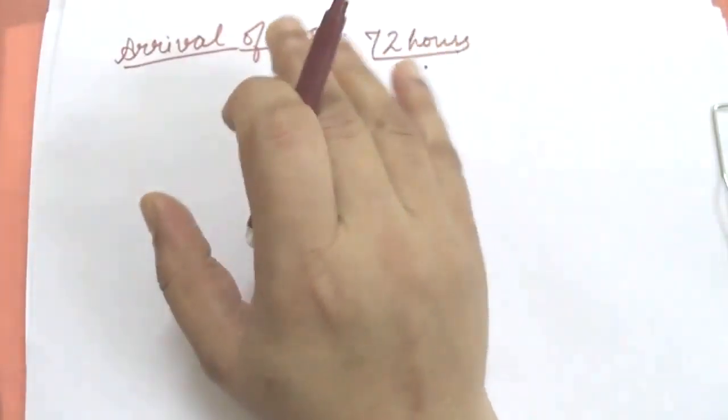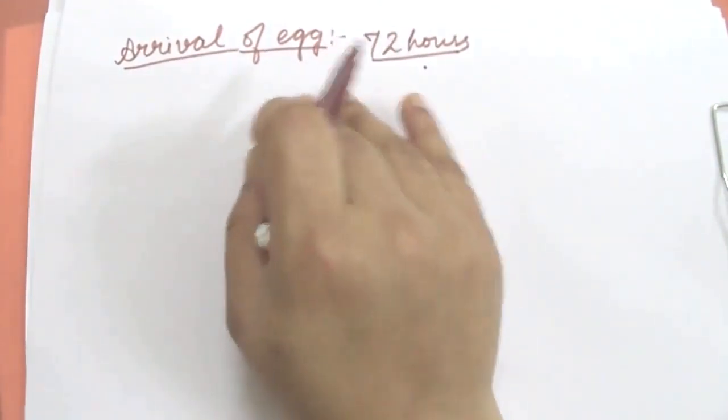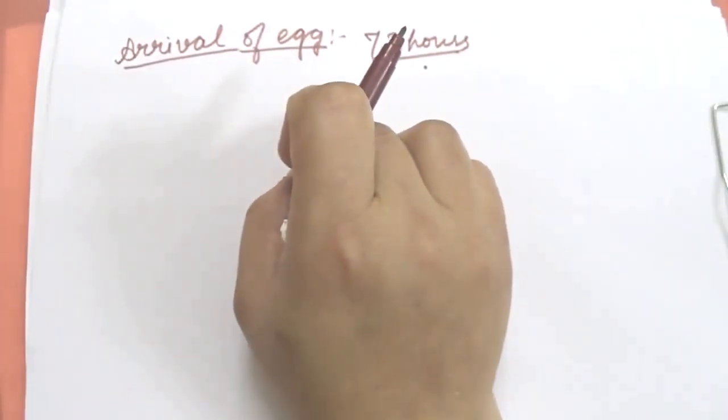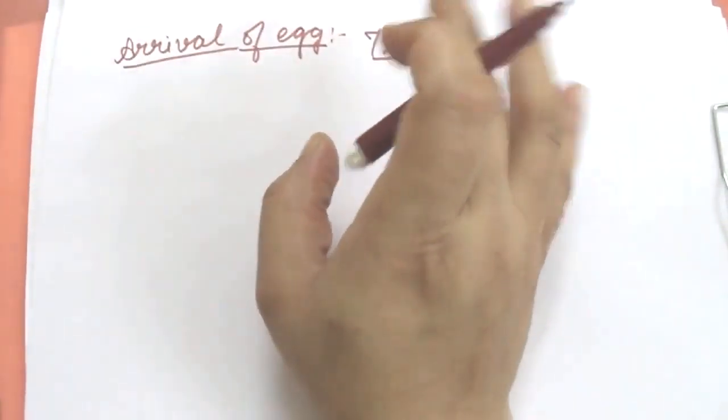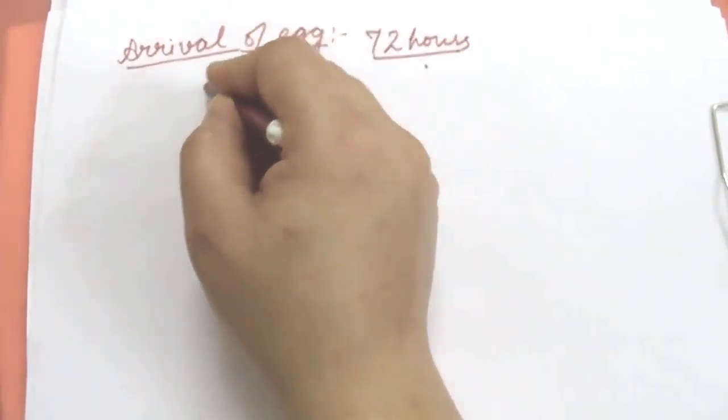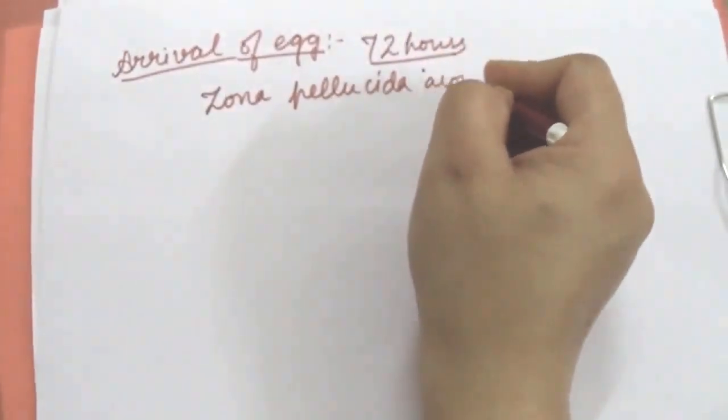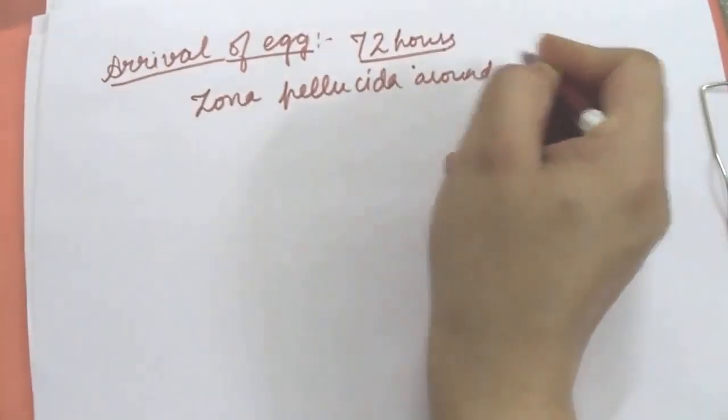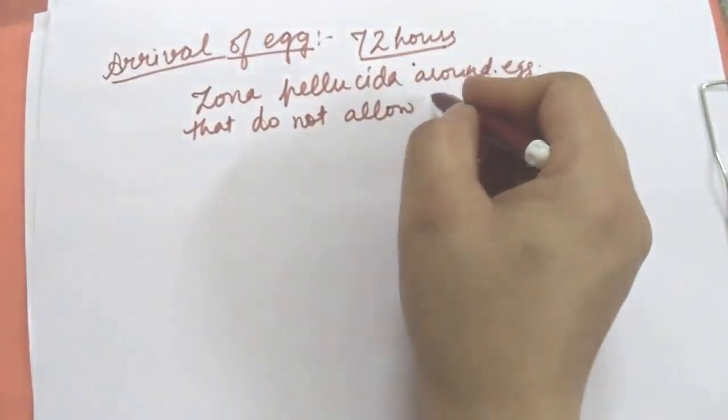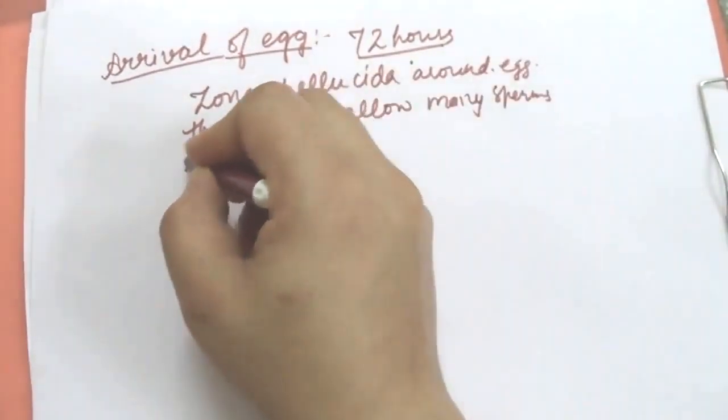It means most of the sperms contribute. Only one sperm can succeed in fertilizing the egg. Others degenerate in the uterus. Because zona pellucida layer is present around the egg that do not allow many sperms to enter.